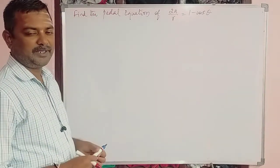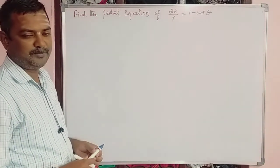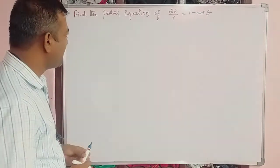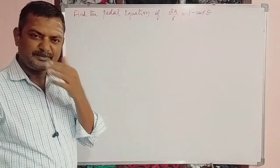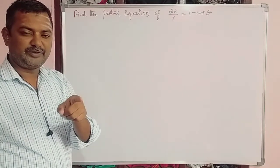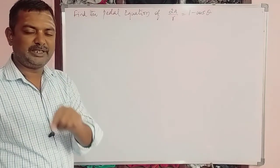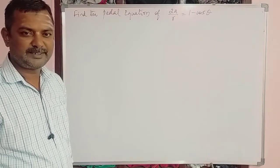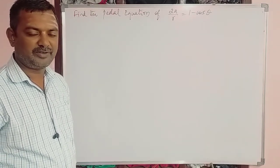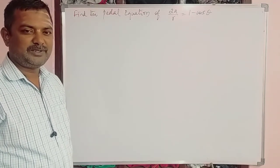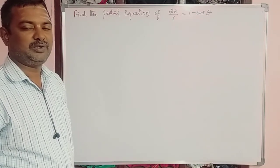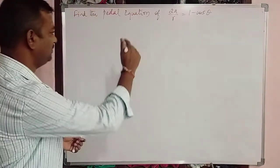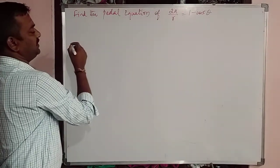The pedal equation is also called the p–r equation. We have two methods. Method 1: if you get φ explicitly, use p = r·sin φ. Method 2: if you get cot φ, use 1/p² = (1/r²)(1 + cot²φ).